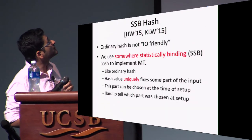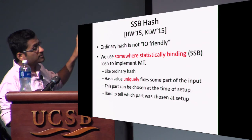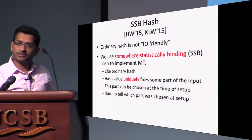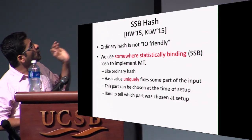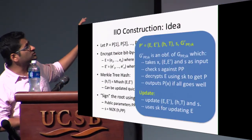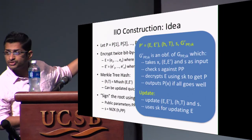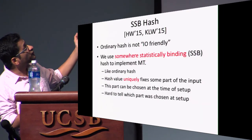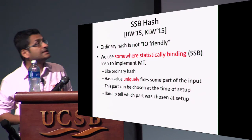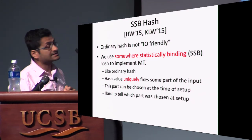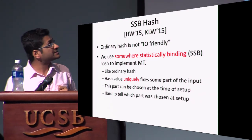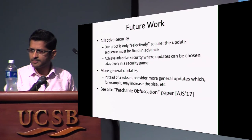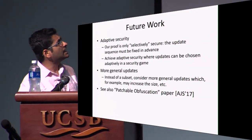Since I'm running short of time, I'm not going to go into details of the proof idea — you can look at the paper for that. One thing worth mentioning is that you can't use a generic hash function; we have to use an IO-friendly hash function, specifically the somewhere statistically binding hash.